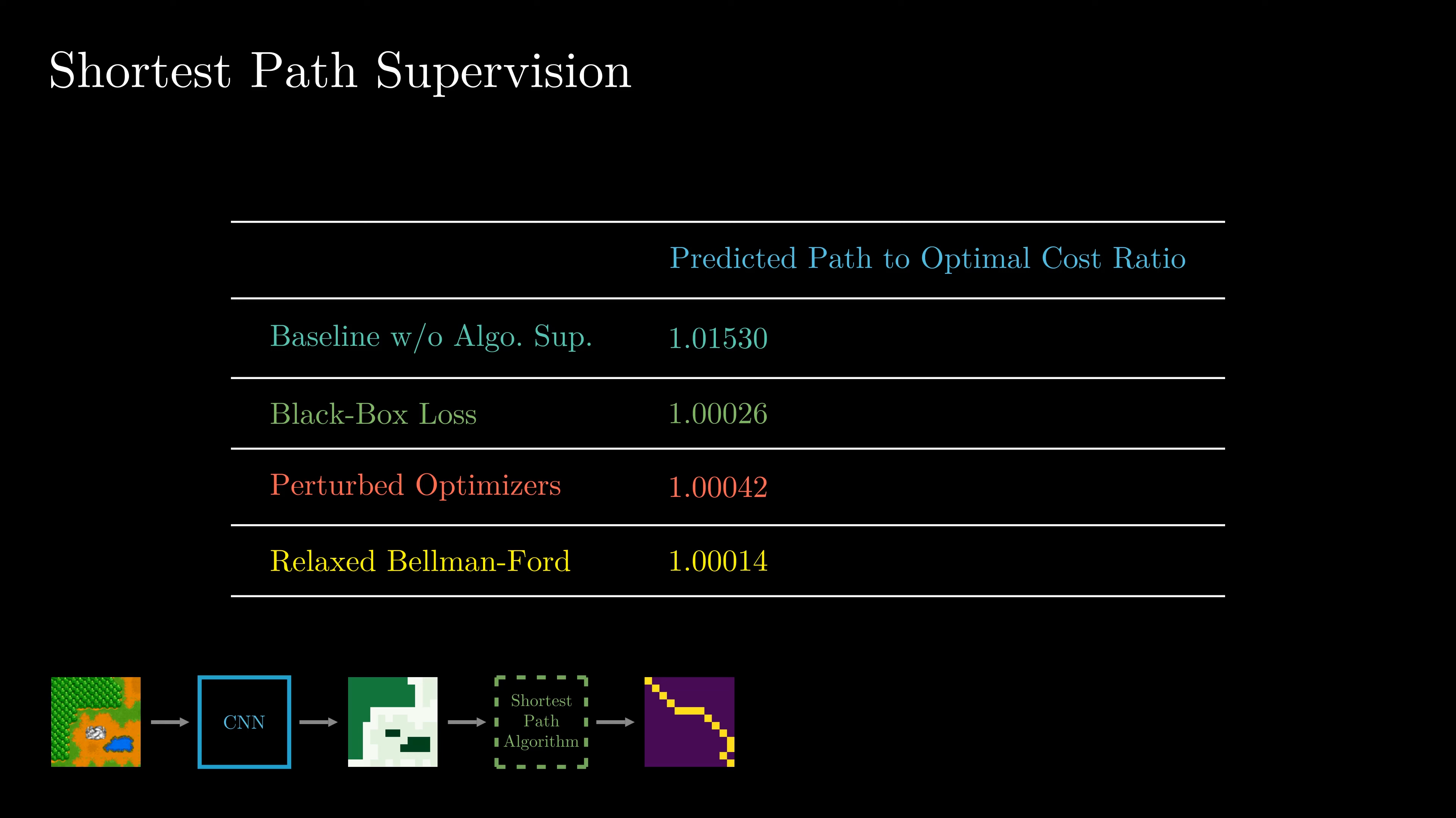We find that the baseline without an integrated algorithm is significantly outperformed by all methods that do integrate an algorithm. We also find that continuous relaxations with logistic distributions achieve the best predictions on this task.